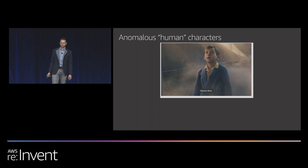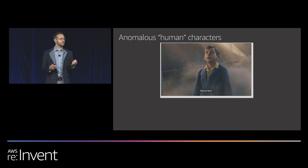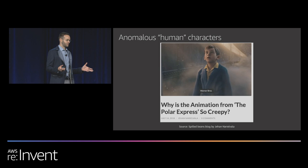But first, let's talk about last holiday season when I was hanging out with my nephew and we were watching the Polar Express. And I thought, why is this movie so creepy? What's wrong with it? I went online, and it turns out I'm not the only one. They summed it up very nicely in the Spilled Beans blog. It turns out that the reason is because of an effect known as the Uncanny Valley.